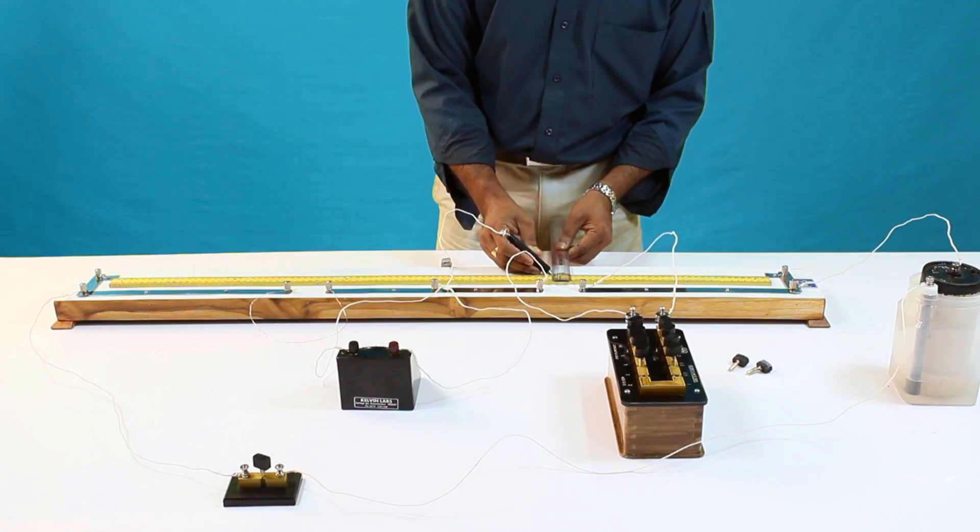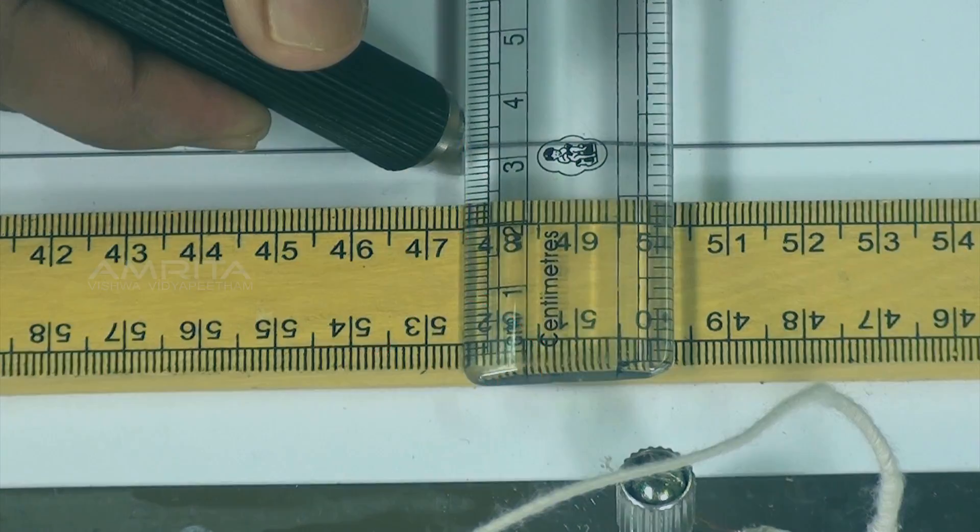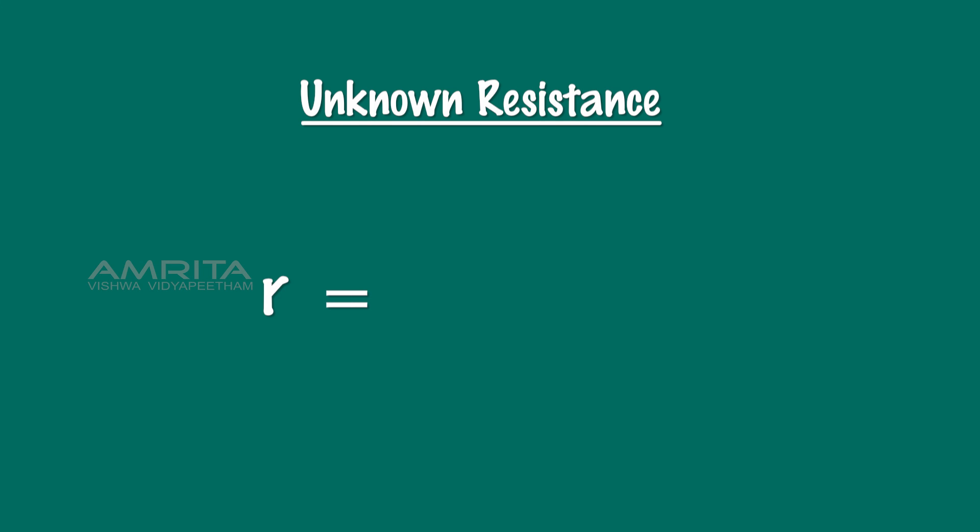Measure the distance L from terminal A to the balancing point. Then, calculate unknown resistance using the equation R equals (100-L) divided by L times R.